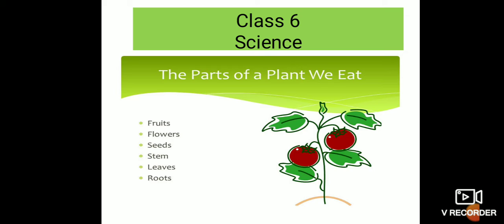The major six parts of the plant that we eat as food are: fruit, flowers, seeds, stem, leaves, and roots.